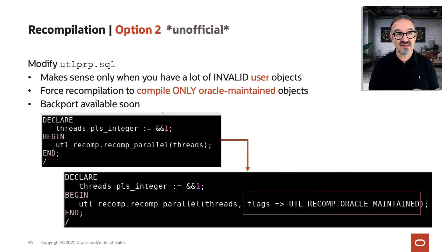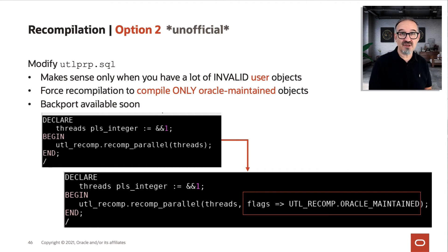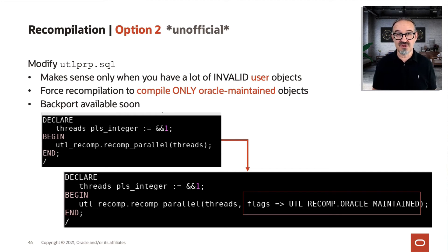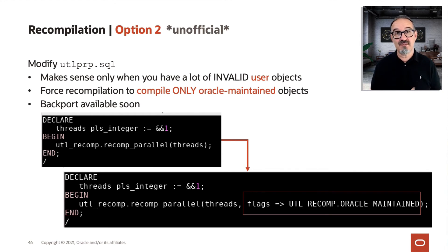Option number two — and this is something we recommend only when you have a lot of invalid user objects — is due to the fact that recompilation does not differ between Oracle maintained objects and user objects. I have seen it in customer environments, especially in development databases, where there are a ton of invalid user objects hanging around, and UTL-RP will still try to compile them. In many cases it will simply fail because some tables or whatever aren't there, but the PL/SQL is still hanging around in a test schema.